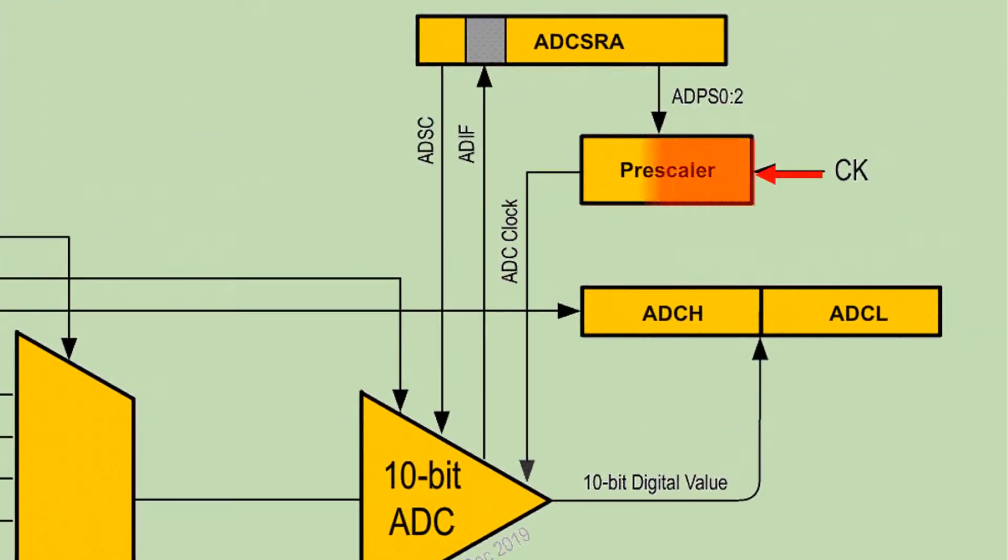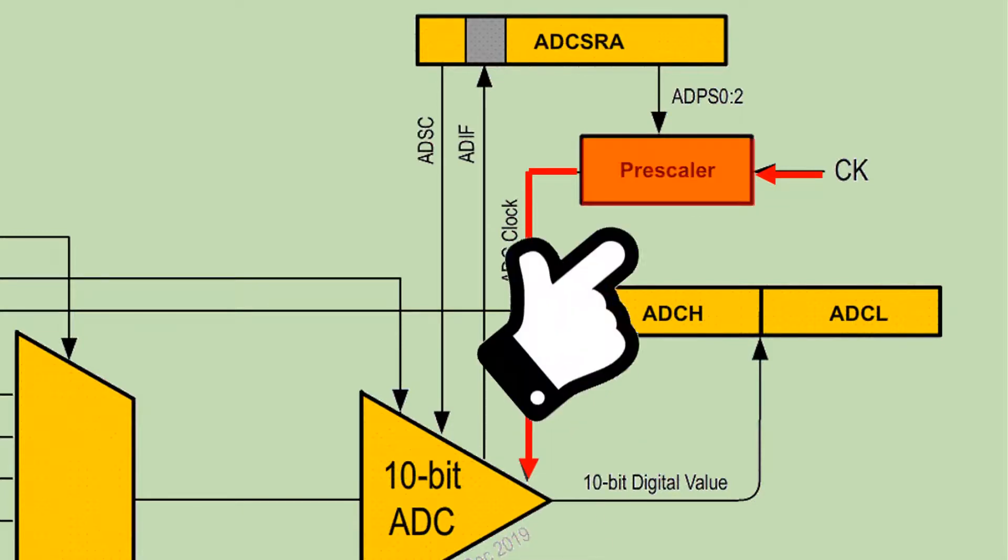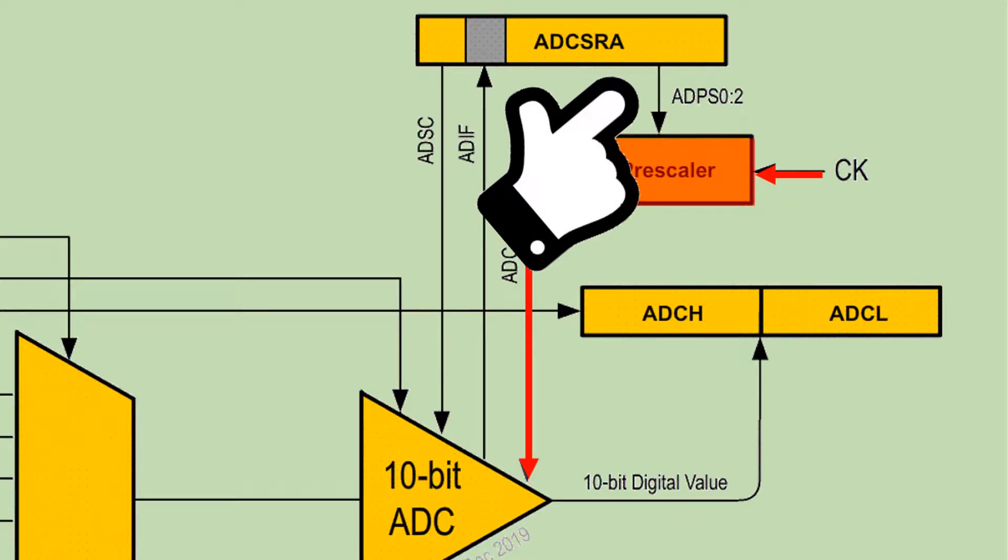The system clock is fed into the ADC to drive its operation. The frequency of the clock driving the ADC is determined by the prescaler, which is controlled by this signal.